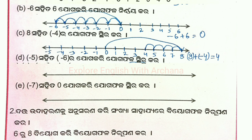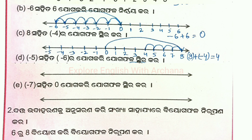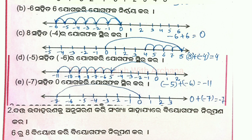Now looking at the next sum — the numbers combined: minus 5 plus minus 6. You can see how much it comes to. Minus 5 plus minus 6 is equal to minus 11.